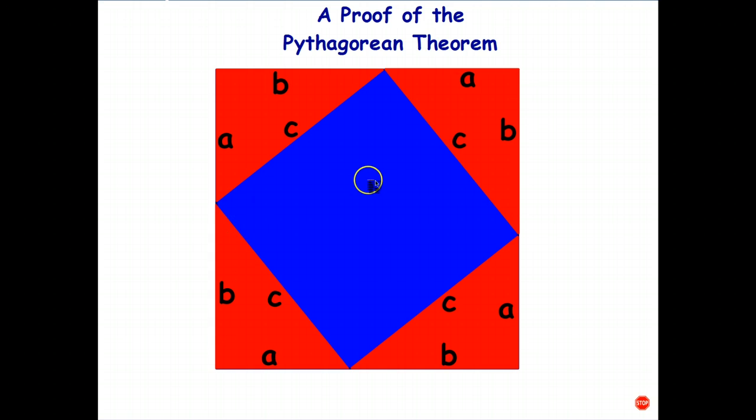Okay, now what's left of the blue square? I can see here I have a square, that's C on each side. So the area of the blue that I can see at the moment is C squared.